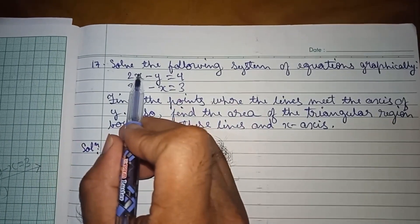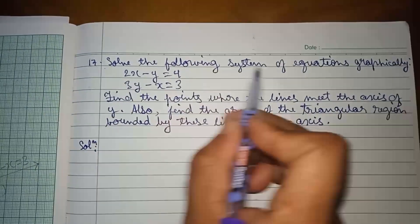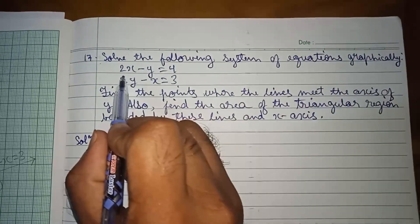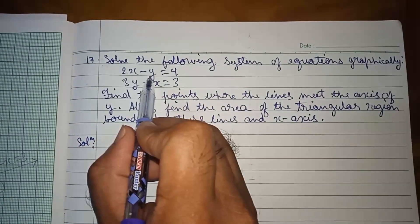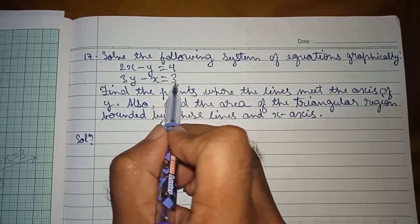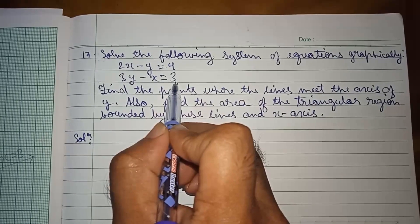Number 17. Solve the following system of equations graphically: 2x minus y equal to 4, and 3y minus x equal to 3.